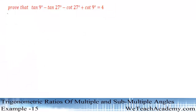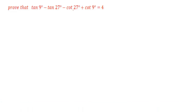Hi guys, welcome to Village Academy. In this video we are going to discuss an example: prove that tan 9 degrees minus tan 27 degrees minus cot 27 degrees plus cot 9 degrees is equal to 4.